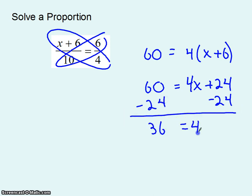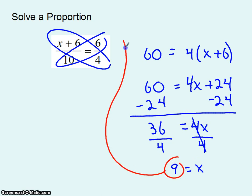36 equals 4x. So divide left and right by 4, x equals 9. Again you can always put this back in and see if it works. I happen to know that 6 divided by 4 is 1.5. So let's check and see if I get the same thing here. If I put 9 in there 9 plus 6 is 15 and 15 divided by 10 is also 1.5.